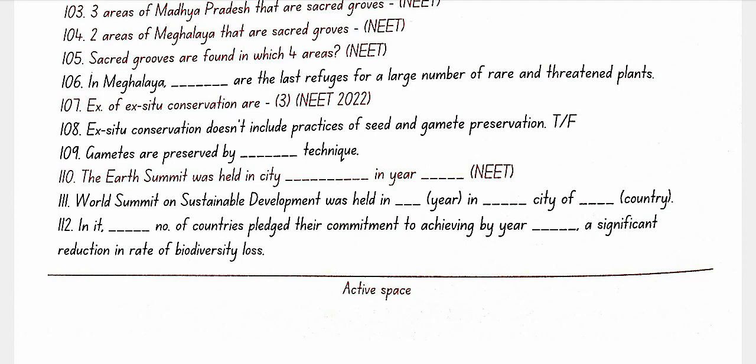The Earth Summit was held in Rio de Janeiro in 1992. The World Summit on Sustainable Development was held in 2002 in Johannesburg, South Africa. At that summit, 190 countries pledged their commitment to achieving by year 2010 a significant reduction in the rate of biodiversity loss. Chapter complete.